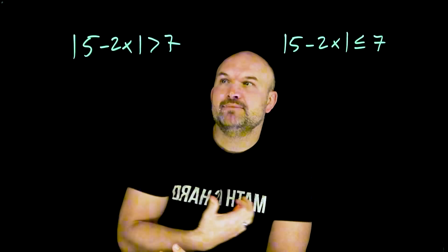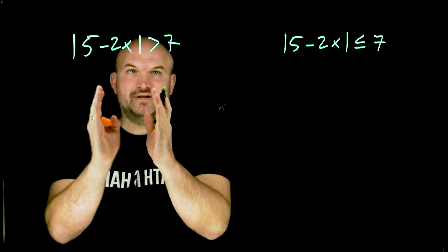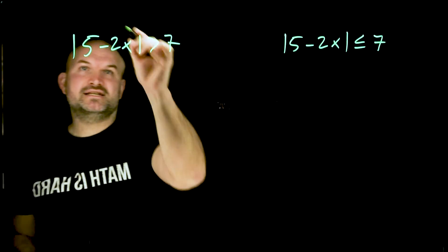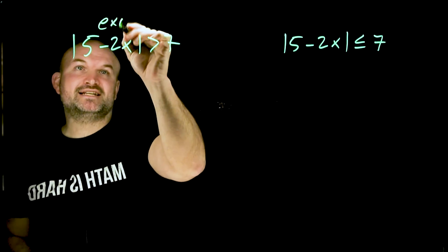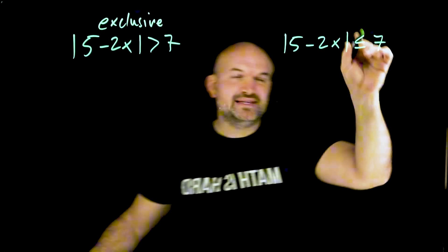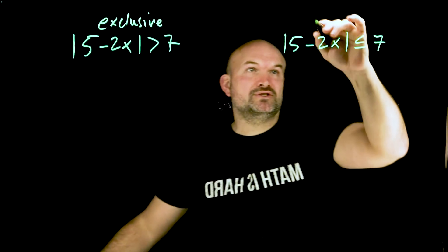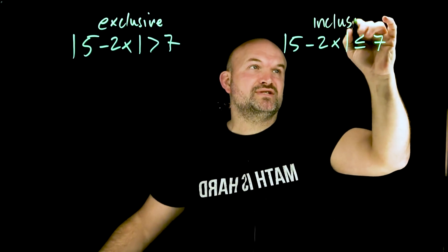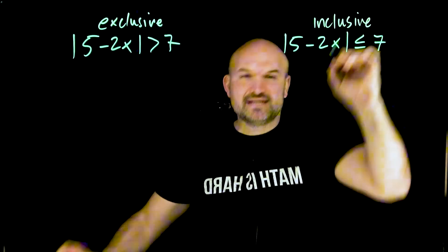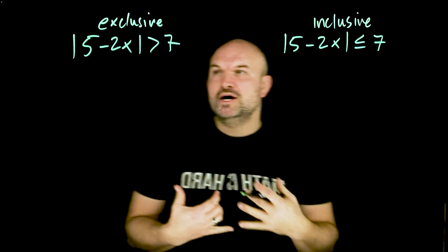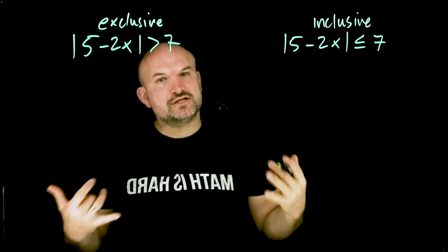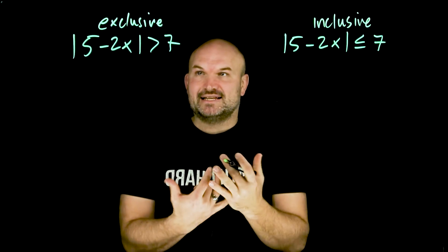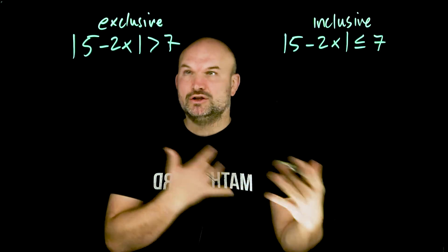It's really important to understand: when we have an absolute value that is going to be greater than a value, this is going to be what we call exclusive. And when we have something that's less than or equal to, that is going to be inclusive. That's going to be very important when we look into graphing our solutions.